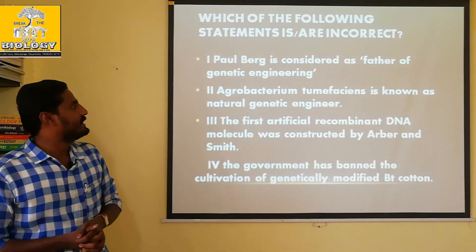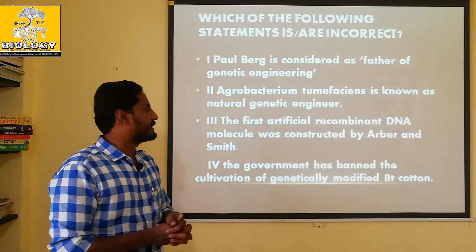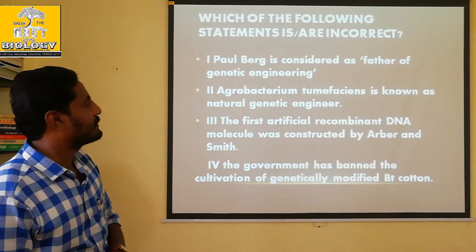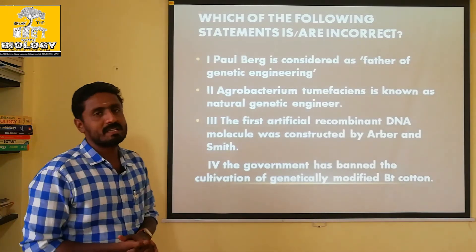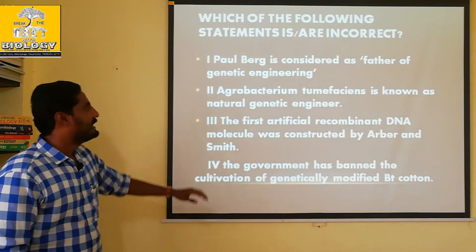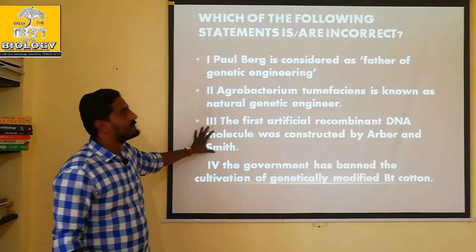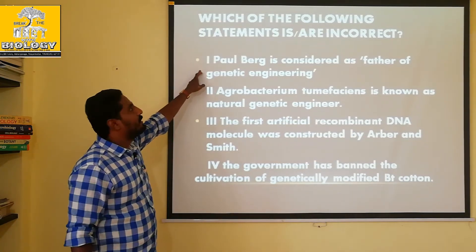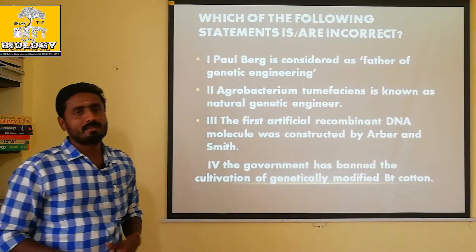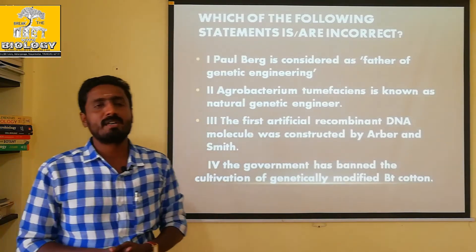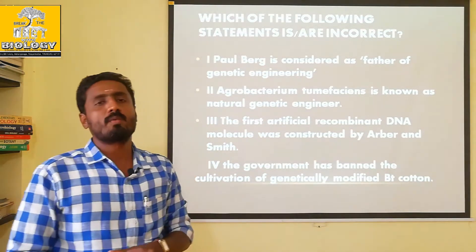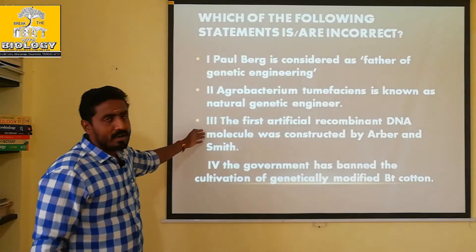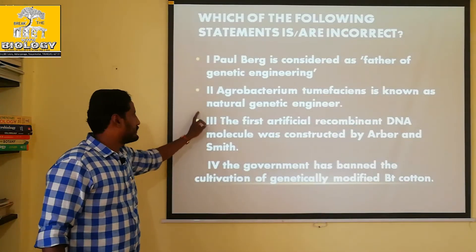Third statement: The first artificial recombinant DNA molecule was constructed by Arbor and Smith. This is incorrect — it was actually Paul Berg who constructed the first artificial recombinant DNA molecule.